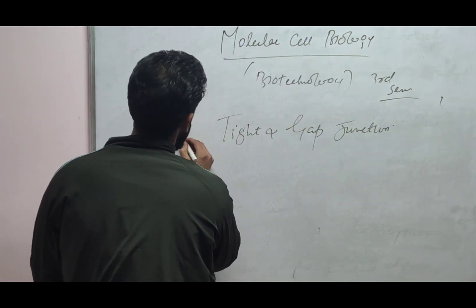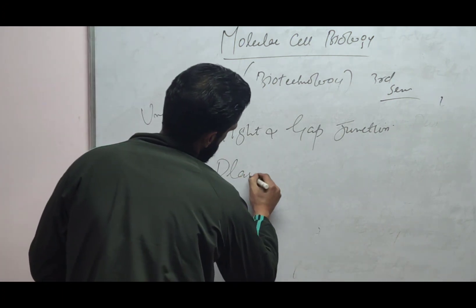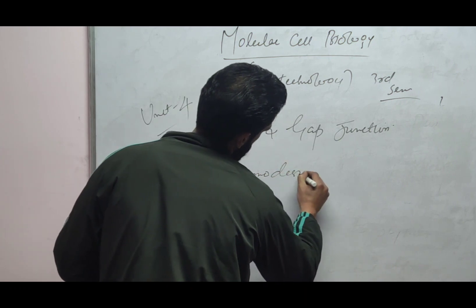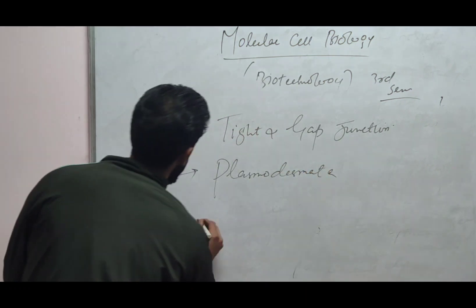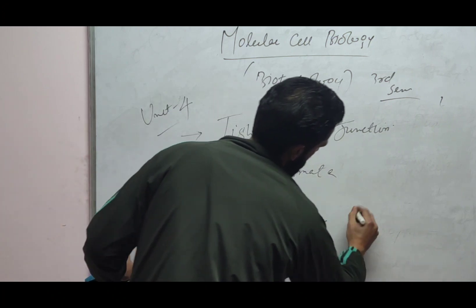Then we have plasmodesmata. Then cell cycle you need to focus on, meiosis, mitosis, and last is apoptosis.